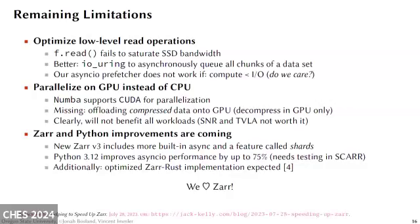SCAR has some remaining limitations we'd like to address. Currently, SCAR's use of f.read is failing to fully saturate the SSD bandwidth. We think it may be better to read using the I/O Uring library to asynchronously queue all chunks of our dataset. Our asynchronous pre-fetcher is also not working if our compute burden is less than I/O burden. We would also like to investigate parallelizing some algorithms on the GPU. Our use of Numba does support CUDA for GPU parallelization, but we would have to decompress data inside the CPU first before passing it to the GPU, which would be very slow. SNR and TVLA are very I/O bound, but CPA matrix multiplication or MIA histogram building inside a GPU could yield some runtime improvements.